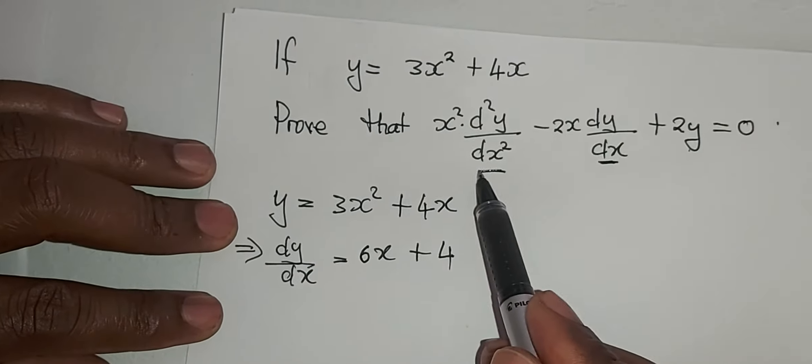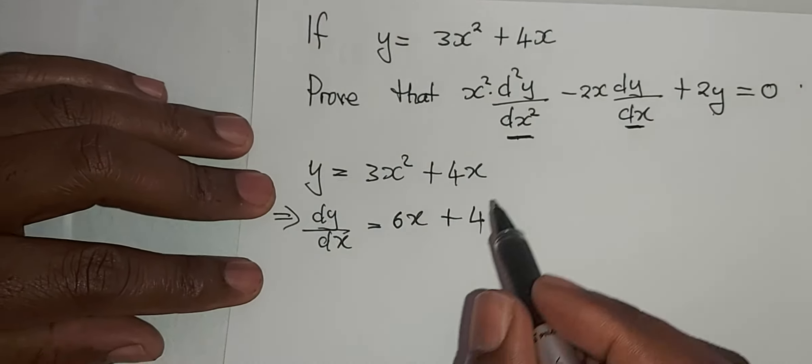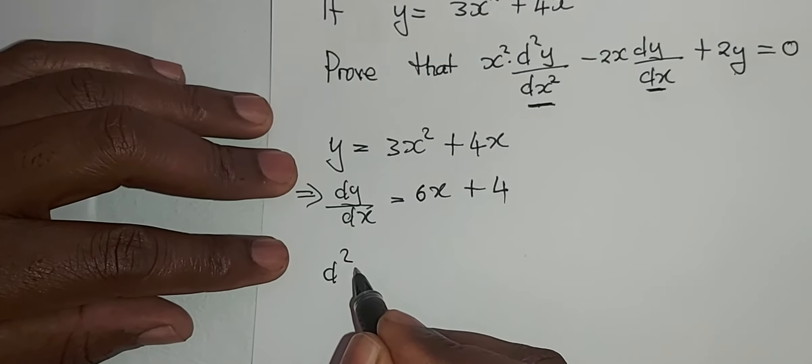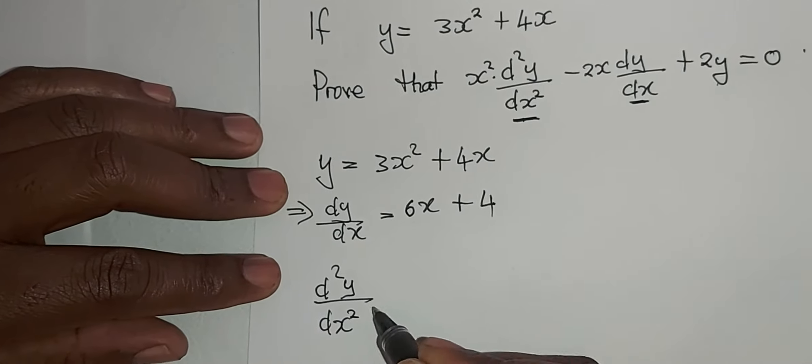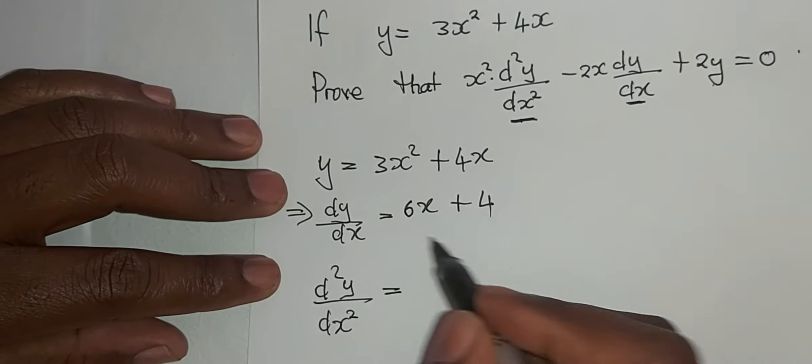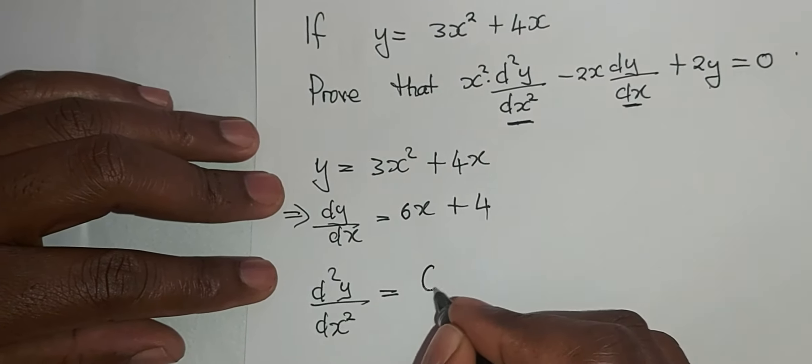Next we must find the second derivative. D squared y over dx squared equals, we differentiate this one, which is exactly 6.